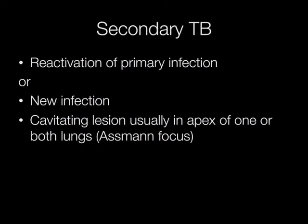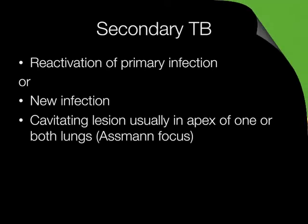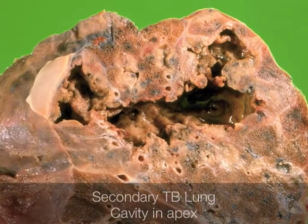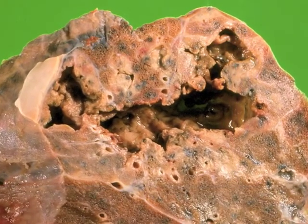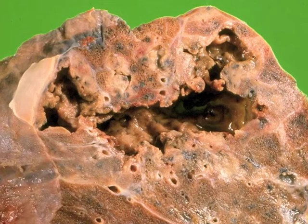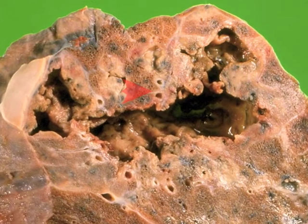Secondary TB may be caused by reactivation of primary infection or it can be due to new infection. The characteristic finding is a cavitating lesion in the apex of one or both lungs. This is known as the Asman focus. The cavitating lesion at the apex of this lung is an example of secondary TB.